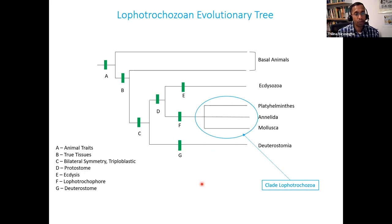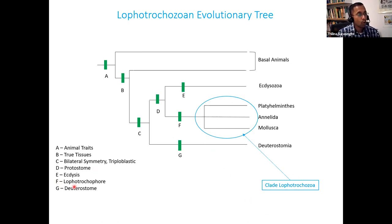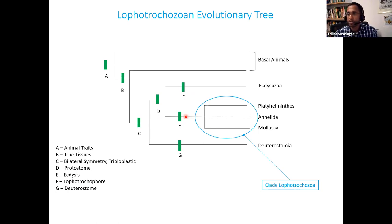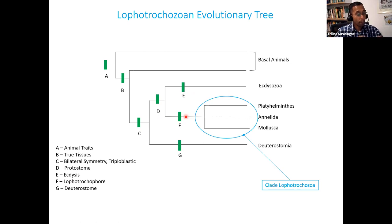Those are the two characteristics you are going to learn. Having the lophophore and the trochophore larva evolved in the ancestor of that particular group. As different phyla evolved from that ancestor, certain things happened to those two characteristic features. In certain groups they preserved both, in certain groups they modified their lophophore or completely lost it, and some groups still have it.